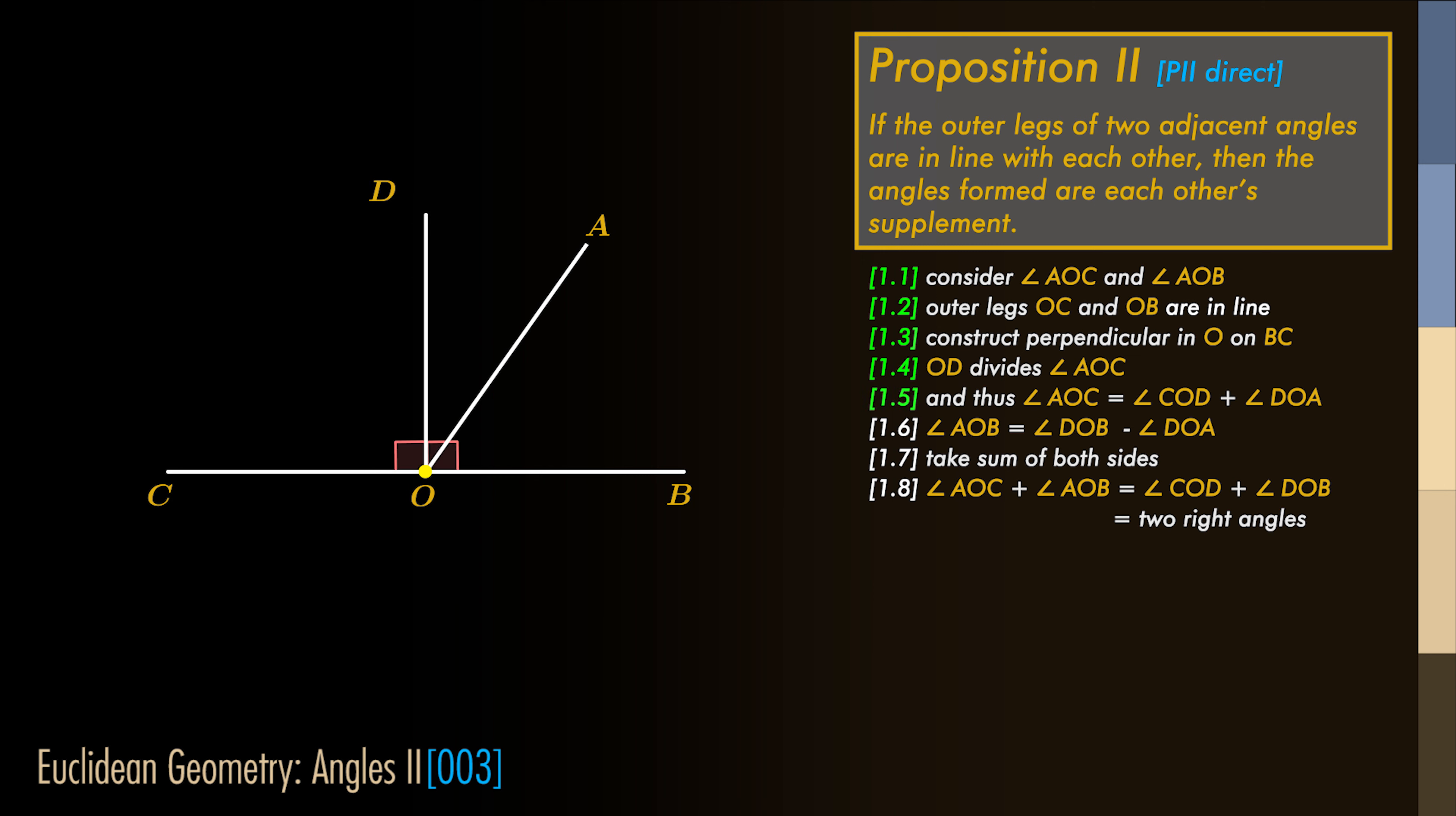We have that the angle AOC equals the angle COD plus the angle DOA, and also that the angle AOB is the difference of the angle DOB and DOA.